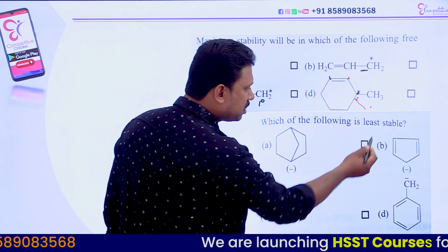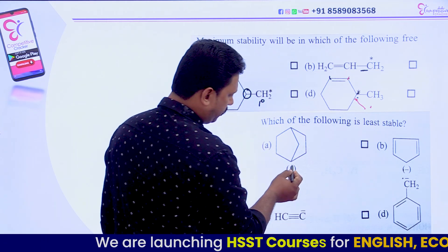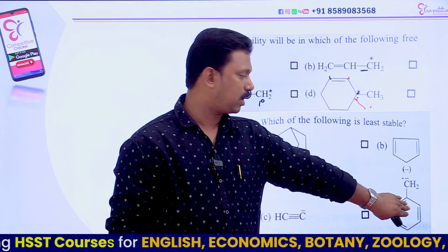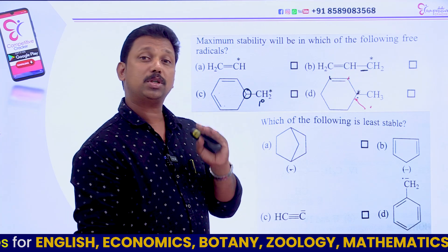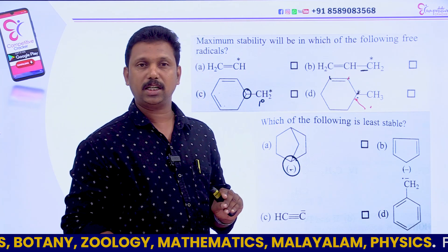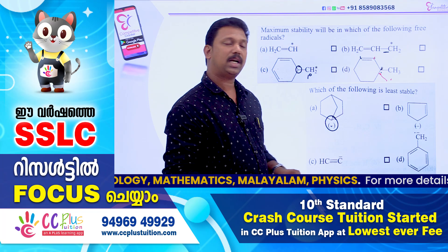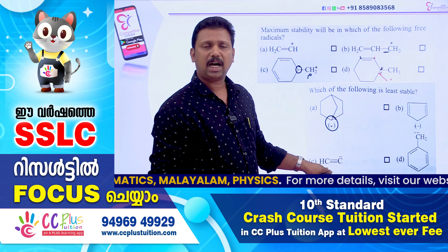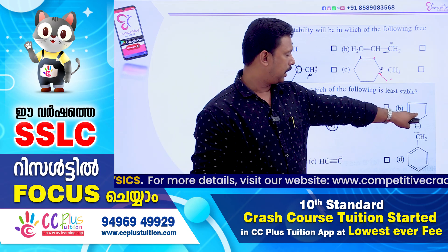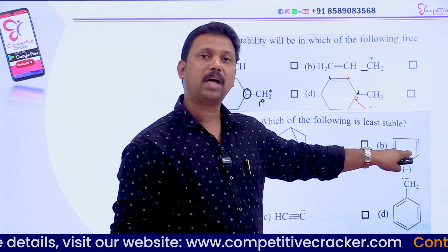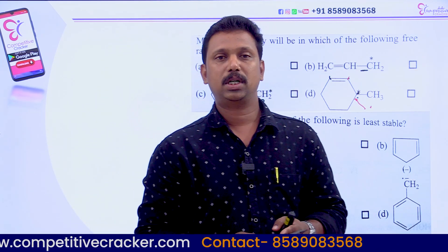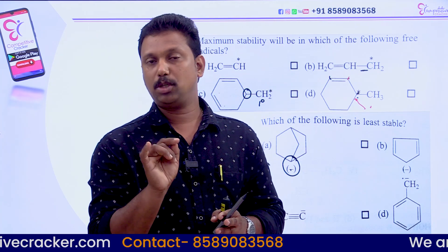Now comes the question: which is the least stable carbanion? These are carbanions — they have a negative charge. When it comes to carbanions, inductive effect is the determining factor along with hyperconjugation. Of course, benzyl carbanion is one among the most stable carbanions, but the question asks for the least stable. This is a bicyclic ring with a bridgehead, and the bridgehead has that negative charge, making it a tertiary carbanion — that is the least stable. One option is an acetylide ion where sp-hybridized carbon is electronegative and able to hold the negative charge. Another is the cyclopentadienyl ion, which is aromatic and therefore stable. So among these four, the bridgehead tertiary carbanion is the least stable.